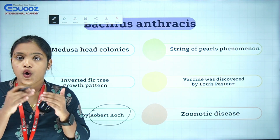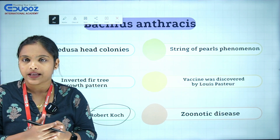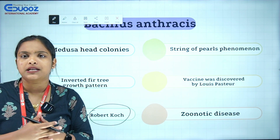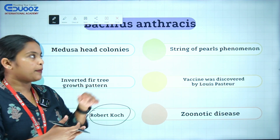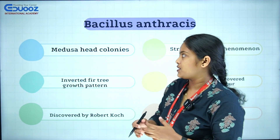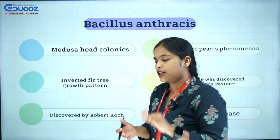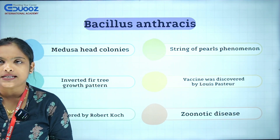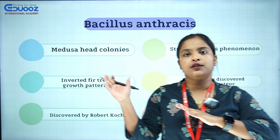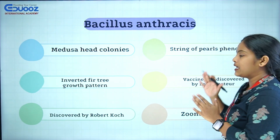Bacillus anthracis is a zoonotic disease. Another zoonotic disease we learned is Undulant Fever caused by Brucella species. Important features of Bacillus anthracis: Medusa Head Colony, Inverted Fir Tree pattern, discovered by Robert Koch, String of Pearls appearance, vaccine developed by Louis Pasteur, and it is a zoonotic disease.